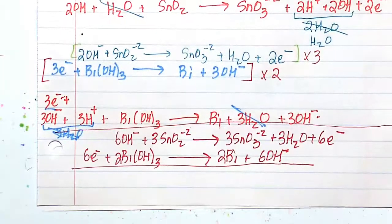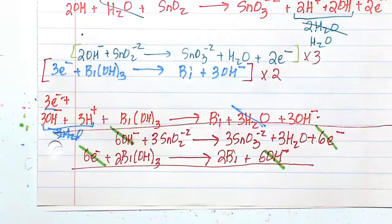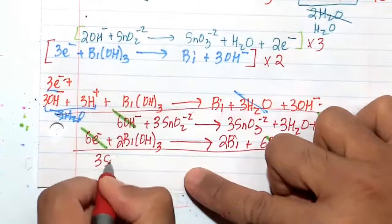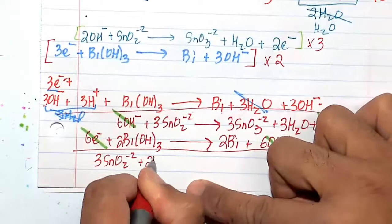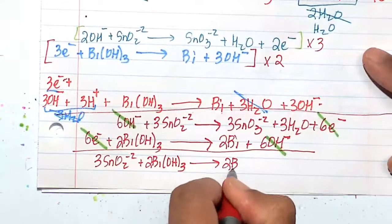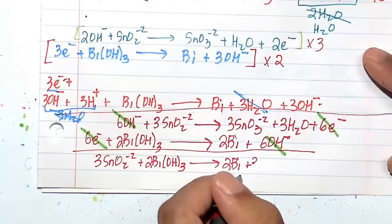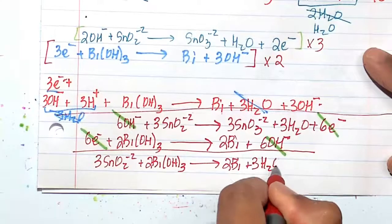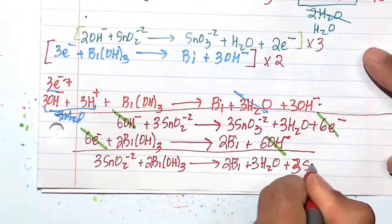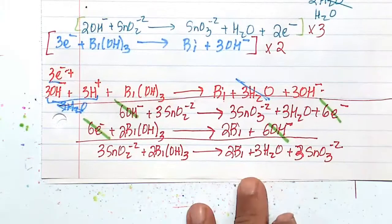Not only do my six electrons cancel, but my six hydroxide ions cancel. And this should give me my final answer. And my final answer should be 3SnO2 minus 2 plus 2Bi(OH)3. And that's going to go to 2Bi plus, let's see, my waters, I think my water stills are there, plus 3 waters, plus 3SnO3 minus 2. Okay, very tricky keeping track of everything here, to be honest with you.